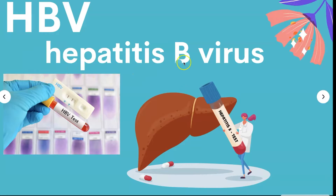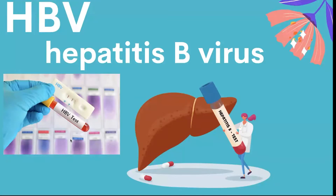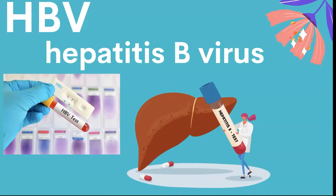HBV is hepatitis B virus. There is also a vaccine to prevent hepatitis B. Hepatitis B is spread when blood, semen, or other body fluids from an infected person enter the body of someone who's not infected. This can happen through sex, sharing needles, syringes, or other drug injection equipment, or from mother to baby at birth. Symptoms can include fatigue, poor appetite, stomach pain, nausea, and jaundice.